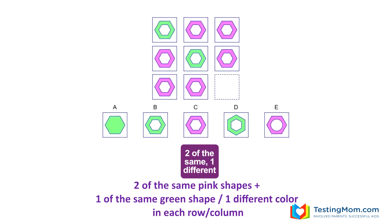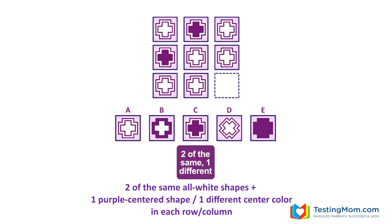Our next rule is called two of the same, one different. Not a very clever name, but it does describe what's happening in the puzzle. The one difference may be with shape, color, number, shape orientation, or rotation — many of the same characteristics we look for in analogy questions. In this example, there are two of the same pink shapes in each row and column, and there's one different green shape in each row and column, so B is the answer. In this puzzle, each row and column has an all-white shape and one shape where the center is deep purple. In the bottom row, we need a shape with a deep purple center, and that would be C. Each row and column has two of the same and one different figure.